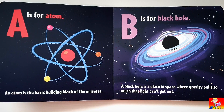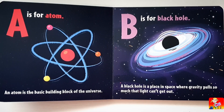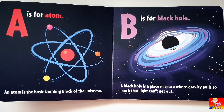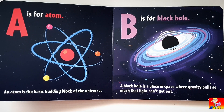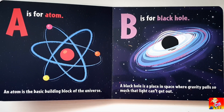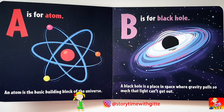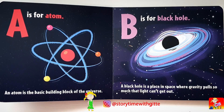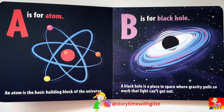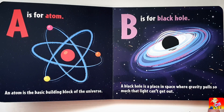A is for Atom. An atom is the basic building block of the universe. B is for Black Hole. A black hole is a place in space where gravity pulls so much that light can't get out.